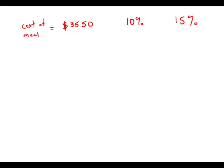A restaurant meal cost $35.50 and there was no tax. If the tip was more than 10% and less than 15% of the cost of the meal, then the total amount paid must have been between which of the following.